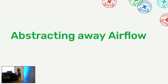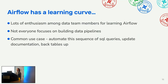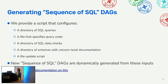We've also abstracted away Airflow for some use cases. Airflow has a learning curve, and not everyone on the data team focuses on building pipelines, so it's hard to justify the time to get fully spun up. We identified a common use case: running a sequence of analytic SQL queries, updating documentation, and backing them up. Using dynamic DAG generation, users can specify a directory of SQL queries, an ordering file, a directory for checks, schemas for column-level documentation, and a simple bash script copies everything to Cloud Storage where Cloud Composer uses it.